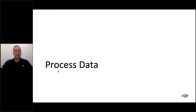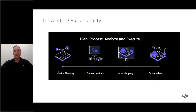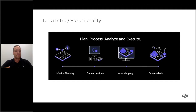Once you've planned and captured your data, the next step is processing. On the DJI side, we have DJI Terra. You can also use DJI Terra for mission planning specifically with the Phantom 4 series — you can plan and run missions from inside Terra. After completing mission planning and data acquisition, you can bring data from any drone and any mission planning software into Terra to generate maps and complete analysis.